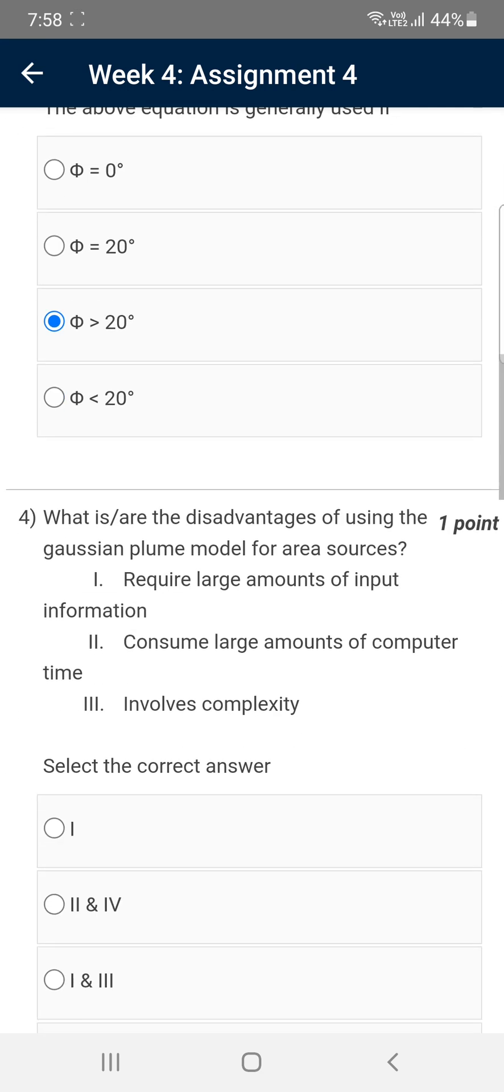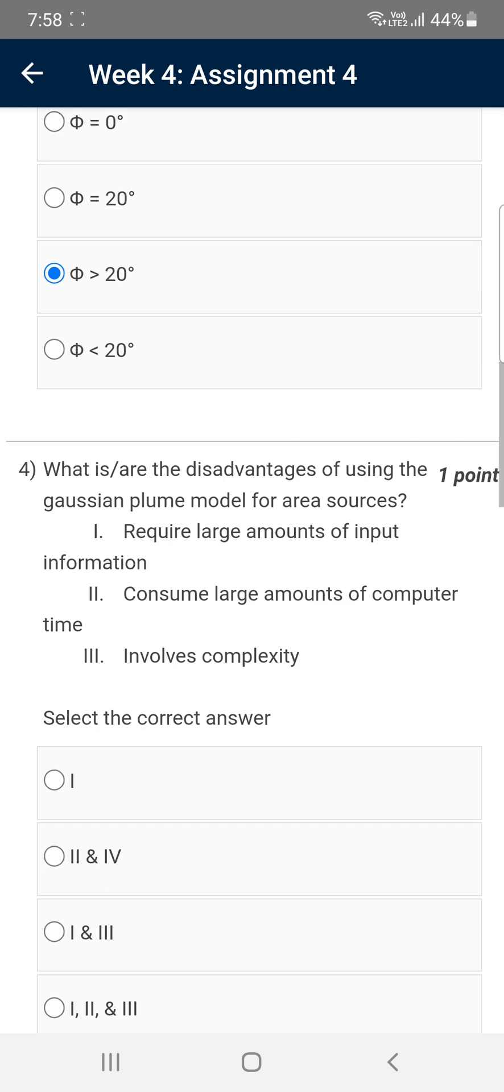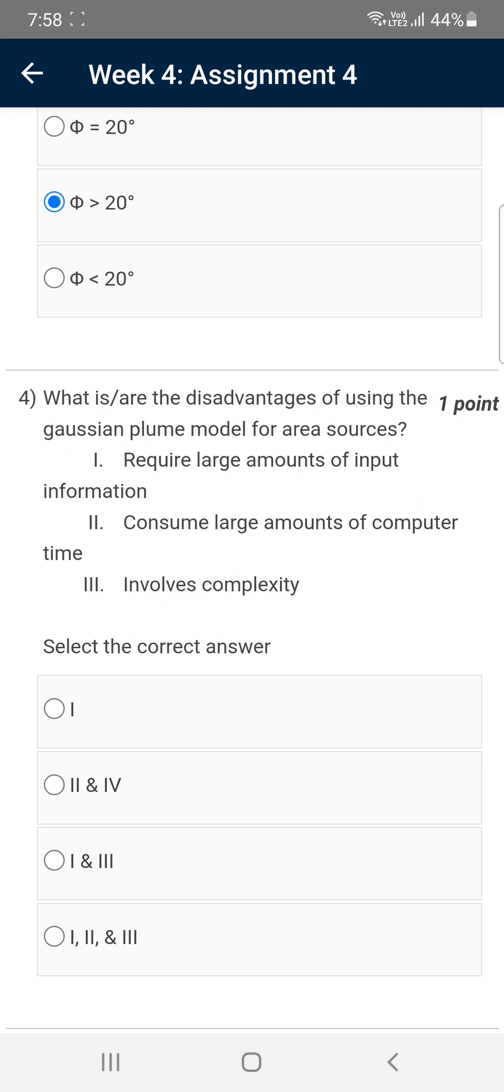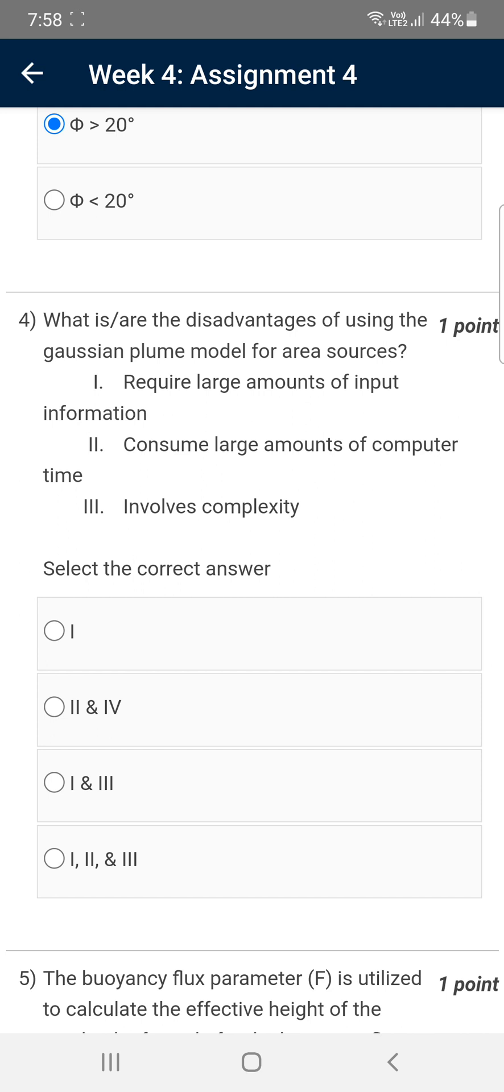Moving on to the fourth question: What are the disadvantages of using the Gaussian plume model for area sources? They give three statements: requires large amount of input, consumes large amount of computer time, and involves complexity. The answer is all three, that means fourth option one, two, and three is the correct answer.